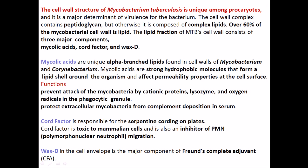The second important component is the chord factor. It is responsible for the serpentine cording seen on plates. The chord factor is toxic to mammalian cells and is also an inhibitor of polymorphonuclear neutrophils (PMNs). Neutrophils are part of the immune system that recognize, uptake, and degrade bacteria. PMNs have nuclei with many different lobes.